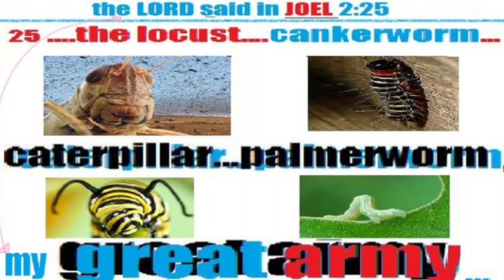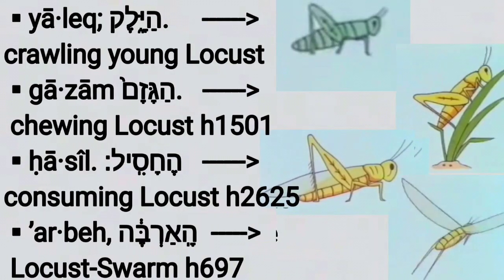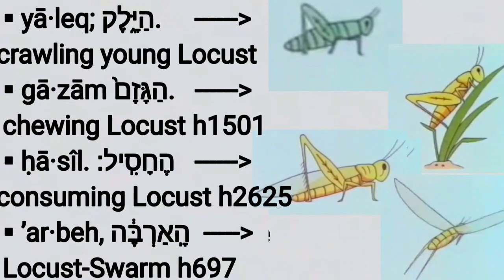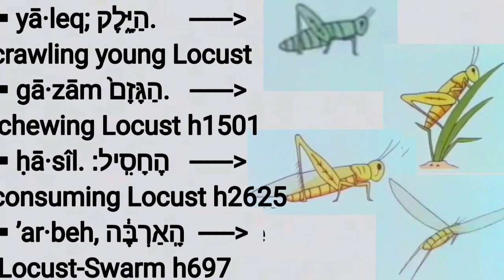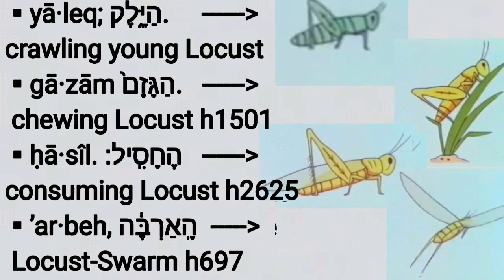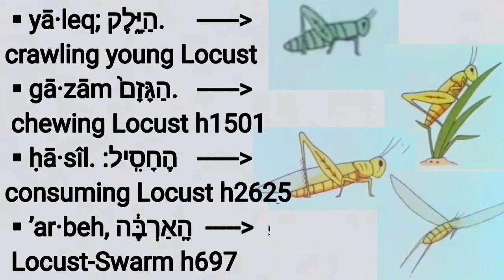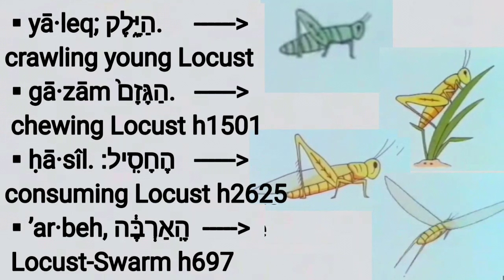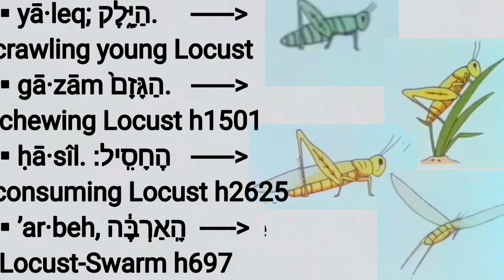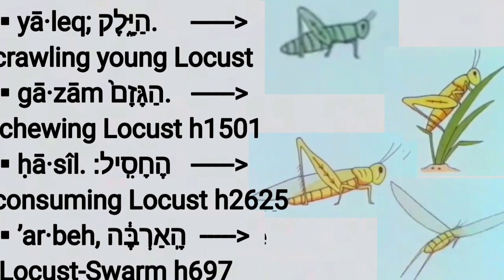The King James unfortunately uses worms here, but in the Hebrew these are not canker worms, caterpillars, or palmerworms. These are different types of locusts. Here you can see the Hebrew words for the crawling locust or the young locust, the chewing locust — the next phase of the locust — the consuming locust, where he grows wings, and then the swarming locust. The last one is when they form a swarm together. That is another Hebrew word, 'arba,' for the swarm of the locust. So there you can see the actual Hebrew words, and the fact that this is very significant of the stages of the locust.